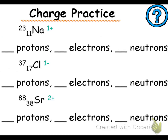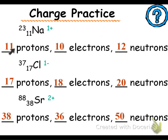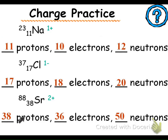Hopefully you paused the video and did that practice. Let's look at the answers. In this example we have 11 protons and 10 electrons — a good way to calculate your electrons is protons minus the charge — and 12 neutrons. Then 17 protons, 18 electrons because it's protons minus the charge and the charge is negative 1, and 20 neutrons. Then 38 protons, 36 electrons, and 50 neutrons.